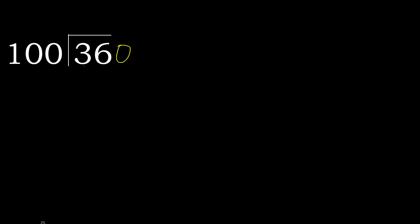That is not a number, therefore complete — always complete with 0 here. 0 point. 360 is not less, therefore with 360: 100 multiplied by which number is nearest to 360,